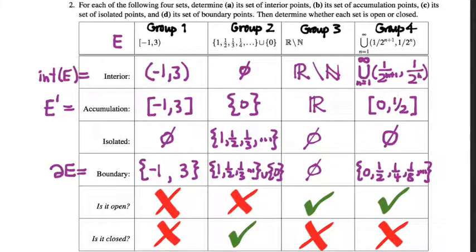I had each of your groups take a set and determine for that set what was its set of interior points. That set, by the way, is a set that we call the interior of the set. That's what we've written here on the first lines. Also determine what is its set of accumulation points. Sometimes we write that set E prime. It goes by a variety of names, sometimes it's called the derived set.